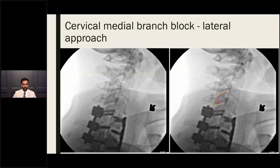Images of a cervical medial branch block in lateral view show superimposition of bilateral articular pillars — the yellow side is contralateral and the red side is the working side. The image is not a perfect lateral, but is safe to proceed with if anatomy is understood. In this single-needle technique, the needle was advanced to the C3 articular pillar, local anesthetic deposited, then advanced to C2, and finally C4.